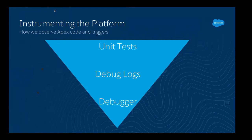When we think about how we ensure that our code is working properly and our business logic works well on the platform, we have three areas of assurance. The first is always our Apex unit tests, with very high test code coverage requirements. Beyond that, we have the Apex debug log, where we can trace execution and leave breadcrumb trails. And then we have a brand new feature: the Apex real-time debugger.